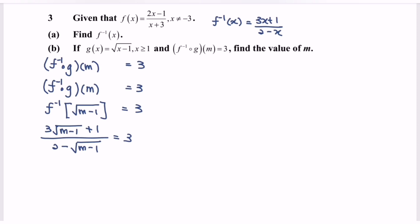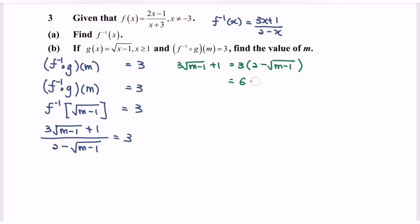Cross multiply: 3 times square root of (m minus 1) plus 1 equals 3 multiplied by (2 minus square root of (m minus 1)). Expand the right-hand side: 6 minus 3 square root of (m minus 1). Rearranging gives 6 times square root of (m minus 1) equals 5.